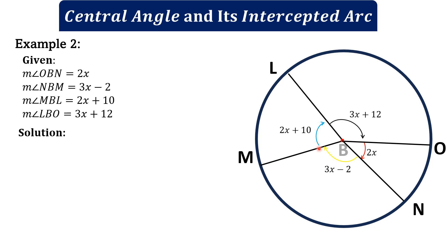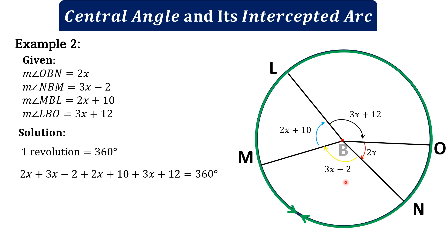The degree measure of a full circle is 360 degrees — that is one complete revolution. Therefore, the sum of all the central angles equals 360 degrees. So: 2x + (3x − 2) + (2x + 10) + (3x + 12) = 360. Combining like terms, we get 10x + 20 = 360 degrees.